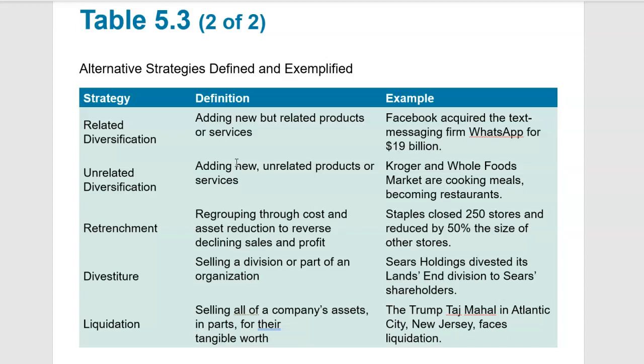Generally, retrenchment is not taken well by investors, but for some stores facing the brunt of internet sales, they may just have to slow their growth and retrench on their number of open stores to become a little bit more profitable in a smaller size. Divestiture means selling a division or something that doesn't work, or something that could be a big source of capital to the company — for example, when Sears was having problems, it divested its land and division and sold that.